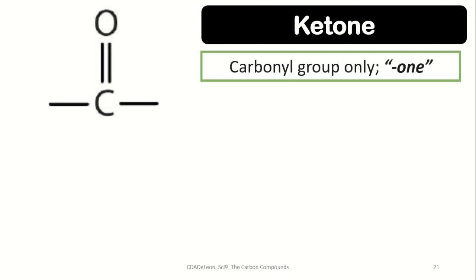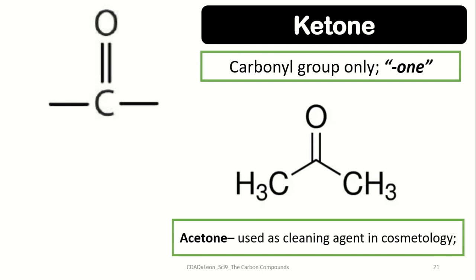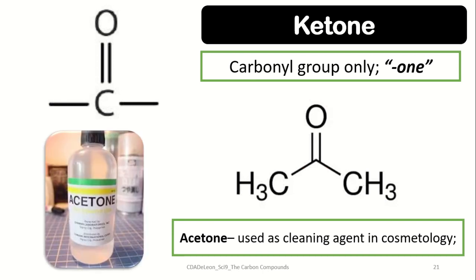Third, we have ketones. Ketones are made up of a carbonyl group and are named using the suffix -one. A carbonyl group refers to a carbon atom with an oxygen double-bonded on it. In ketones, this carbonyl group is found between two different hydrocarbons. One of the most common ketones is acetone, which is used as a cleaning agent in cosmetology.